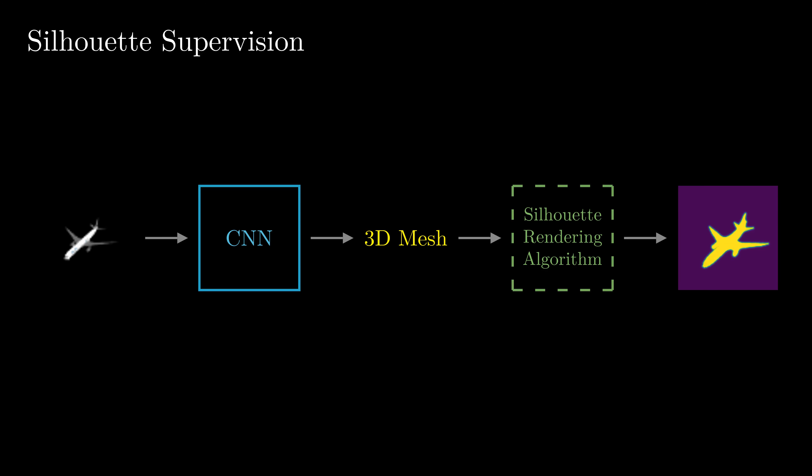By varying the degree of relaxation, that is, by varying the temperature parameter, we can see how the scale of the logistic distributions affects the rendered silhouette. On this task, our general framework achieves competitive performance compared to specialized differentiable renderers.